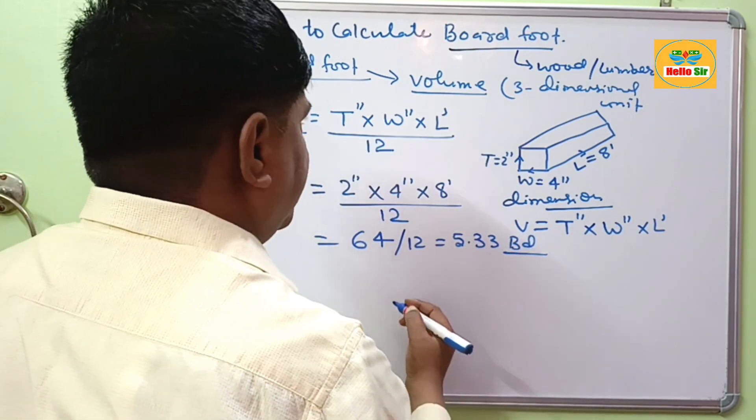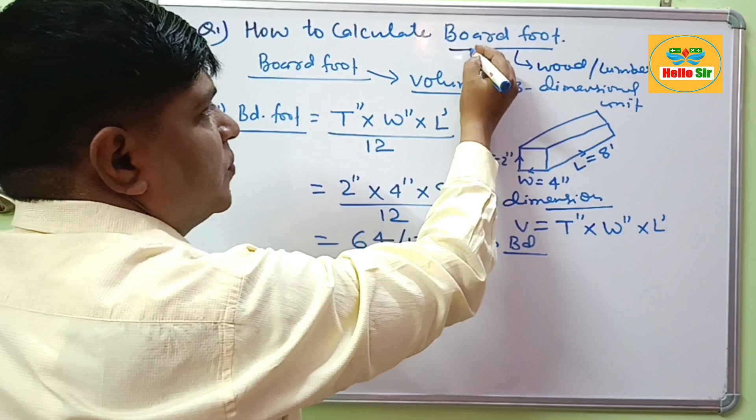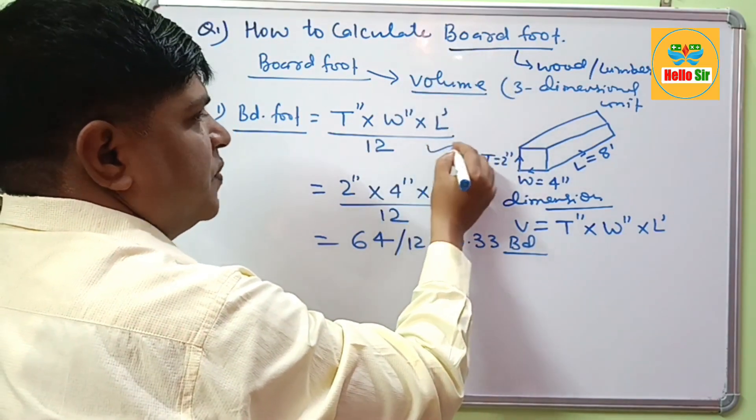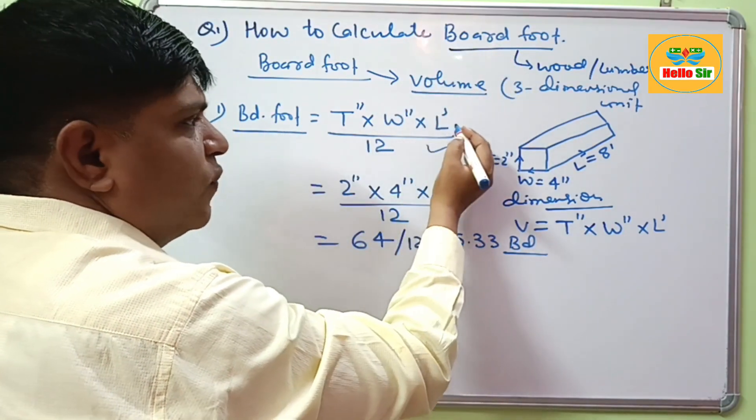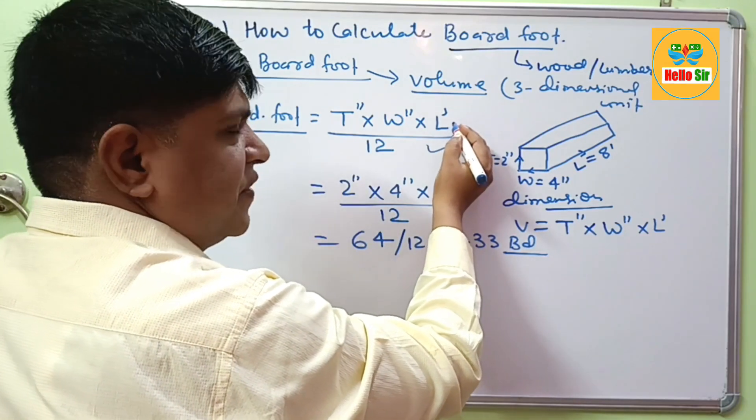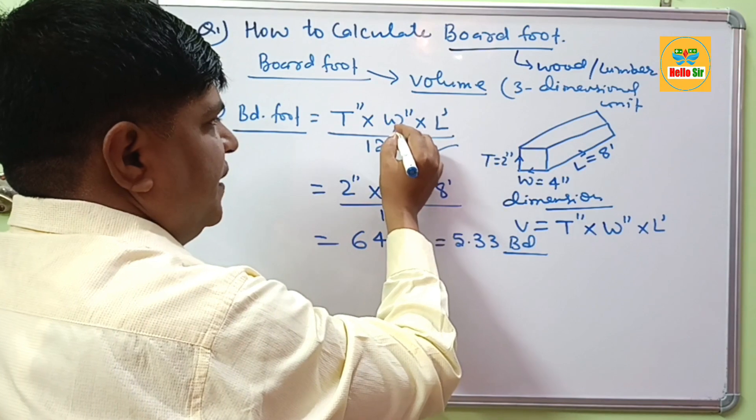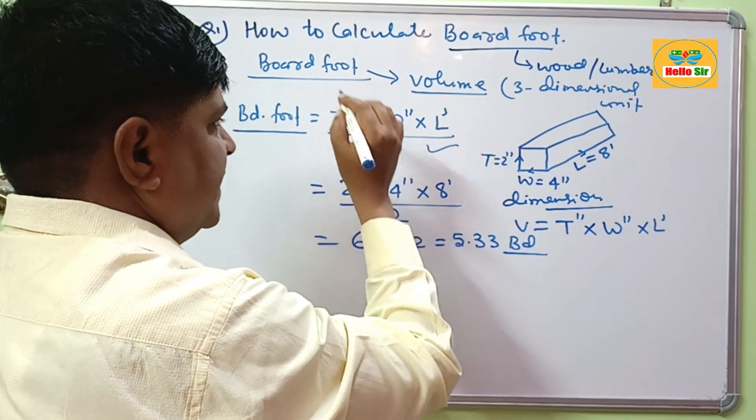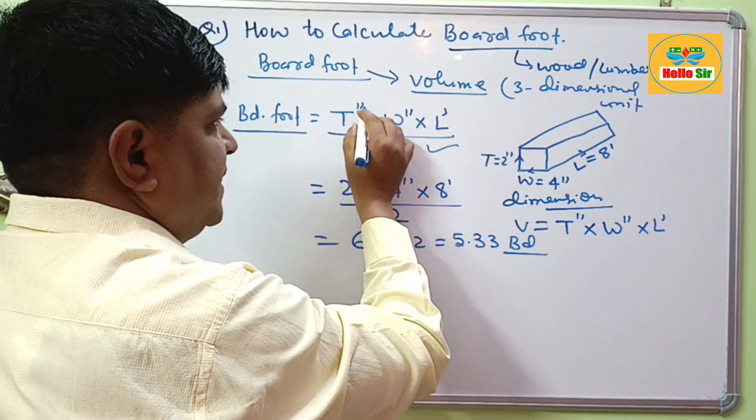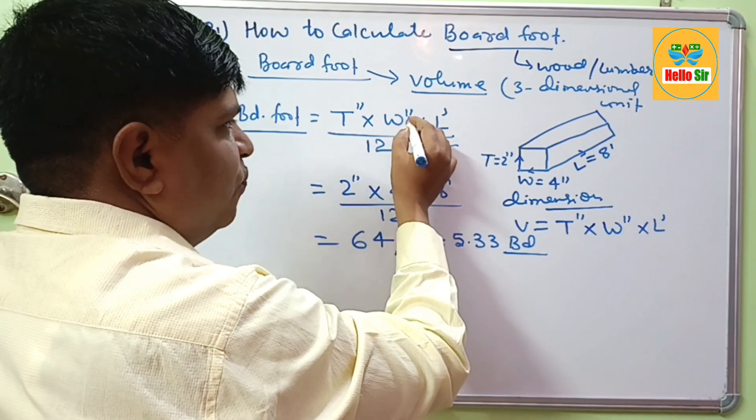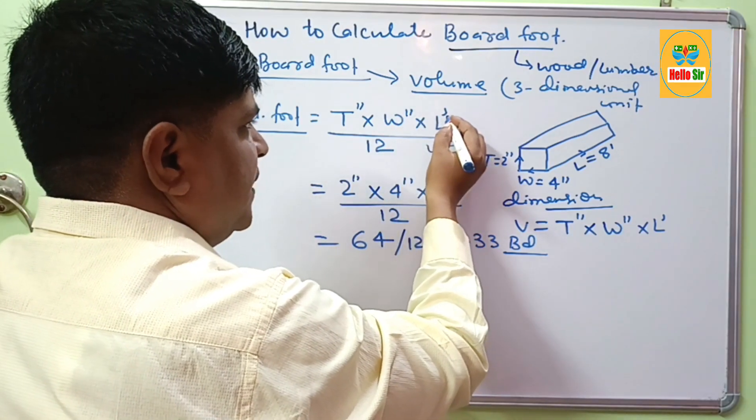For the question how to calculate board feet, you have to use this formula. 1 board foot is equal to 1 foot length multiplied by 12 inches of width and 1 inch thickness. This is the thickness measured in inches, width measured in inches and length in foot.